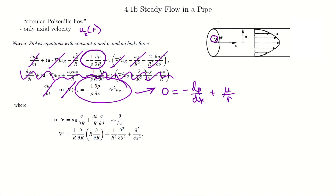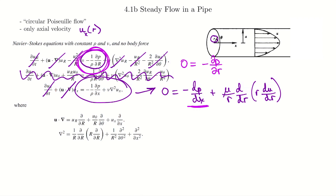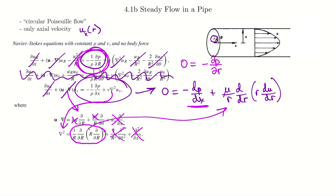From the r-direction equation we find pressure is not a function of r, so we can write d's instead of partials and say pressure is only a function of x. Looking at the Laplacian in more detail: u_x is only a function of r so the x and theta derivative terms are gone. We see our familiar trick again — the first term can only be a function of x, and the second term can only be a function of r, therefore both must be constants. This means dp/dx is a constant, and integrating the remaining expression twice allows us to solve for u_x.